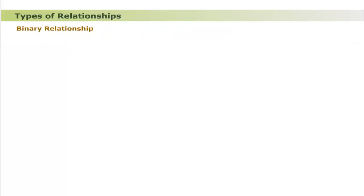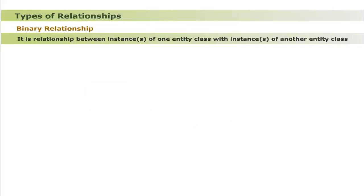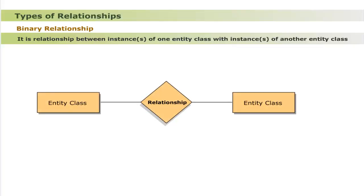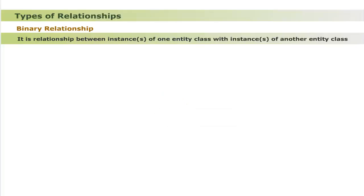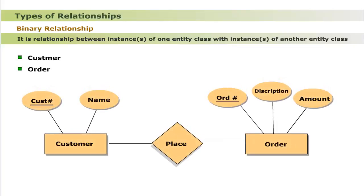A binary relationship is a relationship between instances of one entity class with instances of another entity class, meaning two entity classes are involved. For example, a customer places an order. There are two entity classes — customer and order — with a named relationship 'place'. The ER model shows the relationship 'place' connecting logically the entity class Customer with entity class Order.